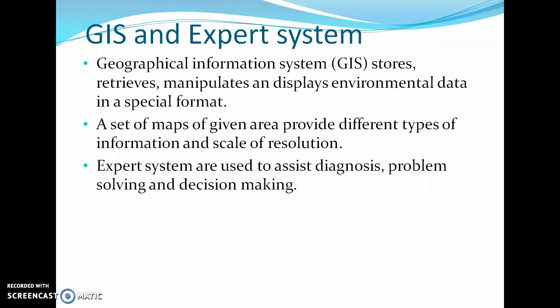The last tool is GIS and expert system. GIS, that is Geographic Information System, can be applied to assess environmental impacts. GIS stores, retrieves, manipulates, and displays environmental data in a spatial format. A set of maps of a given area provides different types of information at different scales of resolution. Expert systems are also used to assist diagnosis, problem solving, and decision making. These are the five tools used to assess environmental issues and environmental impacts.